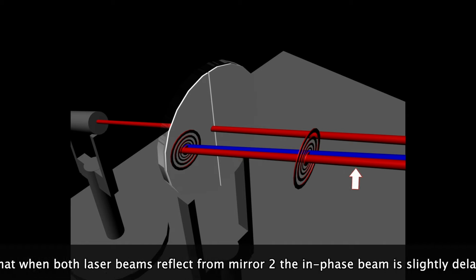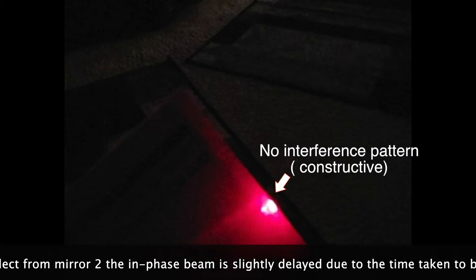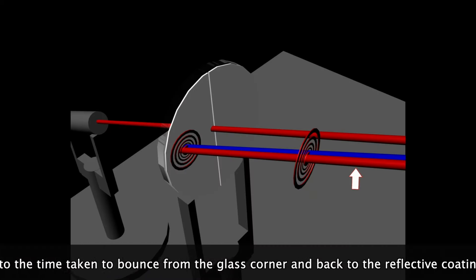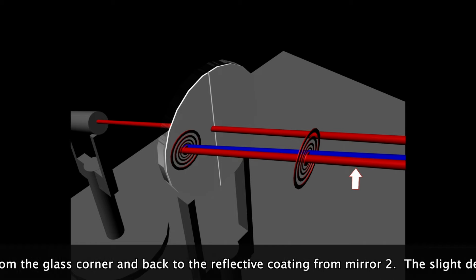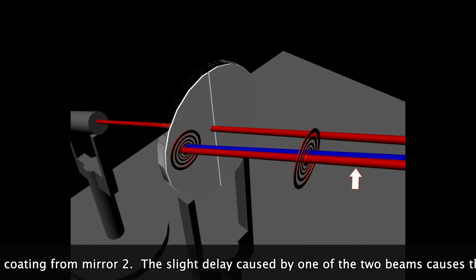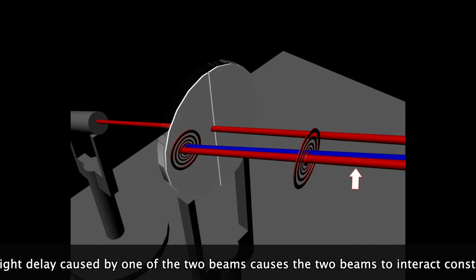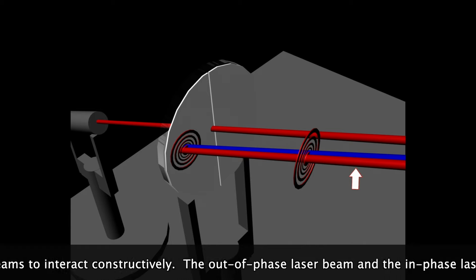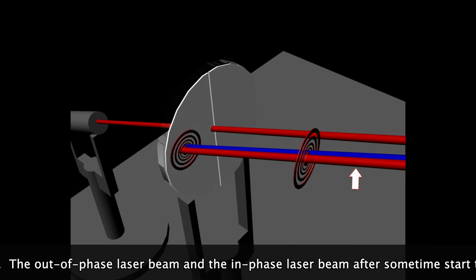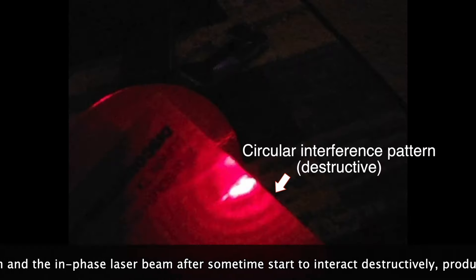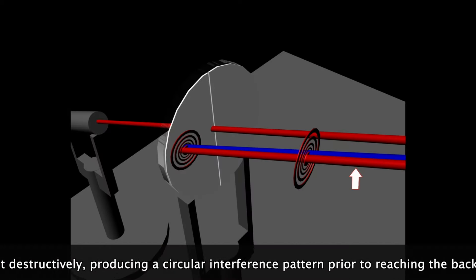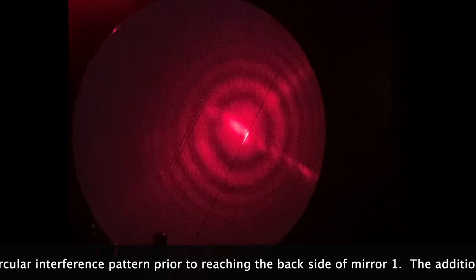The hypothesis is that when both laser beams reflect from mirror 2 the in phase beam is slightly delayed due to the time taken to bounce from the glass corner and back to the reflective coating from mirror 2. The slight delay caused by one of the two beams causes the two beams to interact constructively. The out of phase laser beam and the in phase laser beam after some time start to interact destructively producing a circular interference pattern prior to reaching the back side of mirror 1.